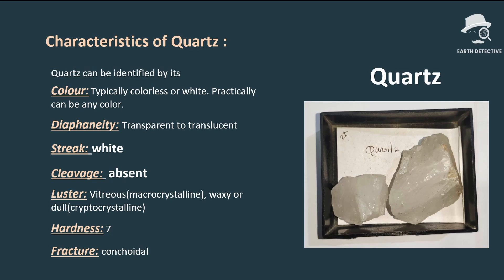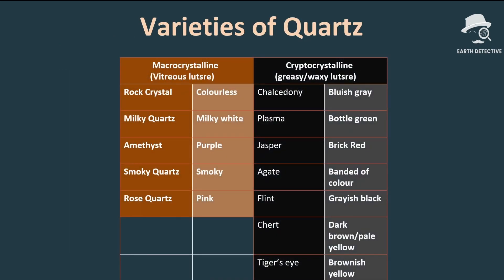Absence of cleavage is another characteristic of quartz. Cleavage is the tendency of a mineral to break in a definite direction. Luster means the appearance of a mineral in light. Macrocrystalline quartz has vitreous luster, whereas cryptocrystalline quartz exhibits waxy or dull luster. Its hardness is seven — hardness means resistance to scratching. Fracture is conchoidal; fracture means non-directional breakage of a mineral, and refers to the nature of the broken surface.